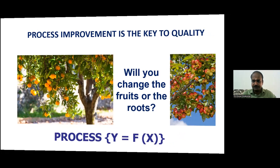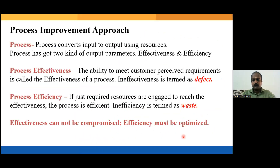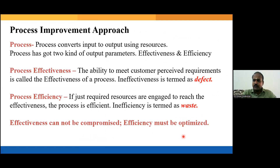A process has two parameters: one is process effectiveness and another is process efficiency. To understand these terms, let us first define what exactly a process is. A process is nothing but a set of activities that are performed under specified conditions to convert inputs into the desired form of outputs.